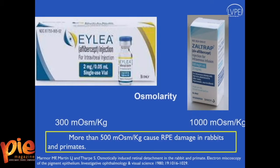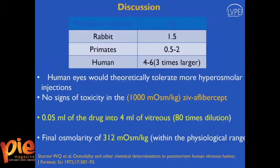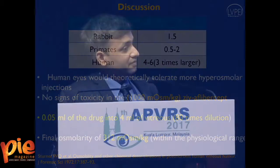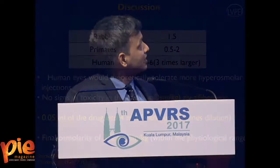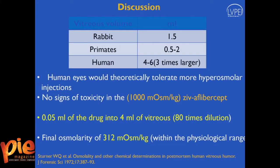The difference in osmolarity is important because way back in 1980, Mike Marmer published that if the osmolarity of the vitreous increases beyond 500 milliosmoles, it can cause RPE damage in animal eyes. The human eye vitreous volume is a little bit larger than rabbit eyes. If you look at the osmolarity of Ziv-Aflibercept at 1,000 milliosmoles per kilogram and inject 0.05 ml into the human vitreous, it gets significantly diluted and the final osmolarity is about 300 milliosmoles — similar to Aflibercept.